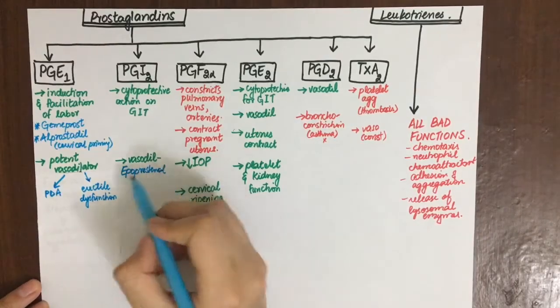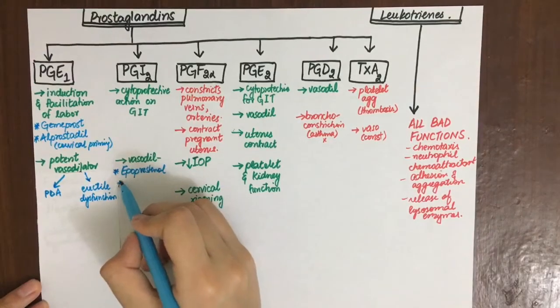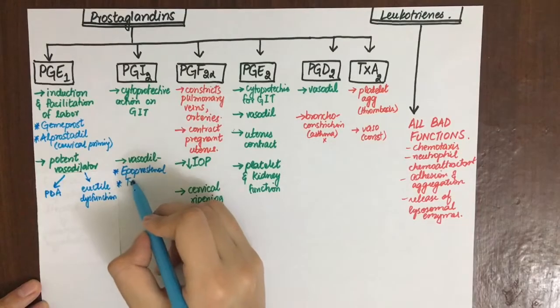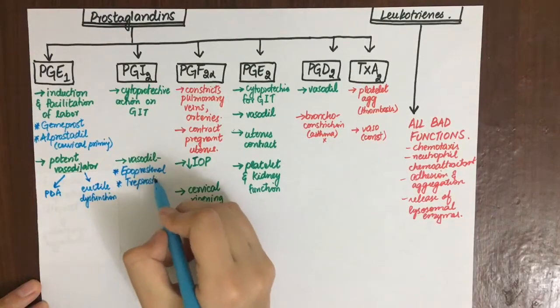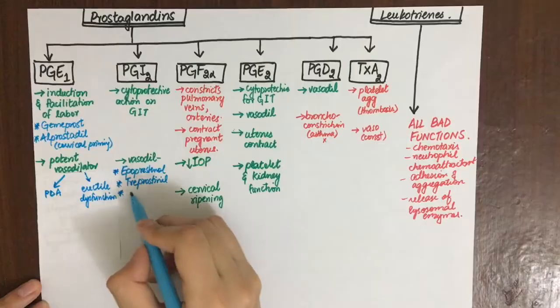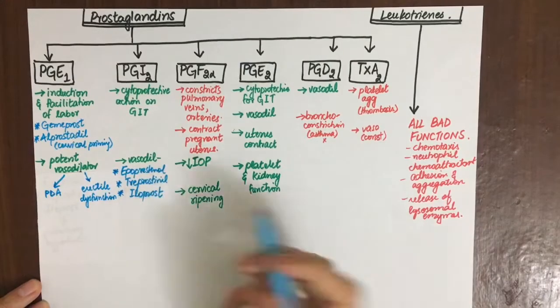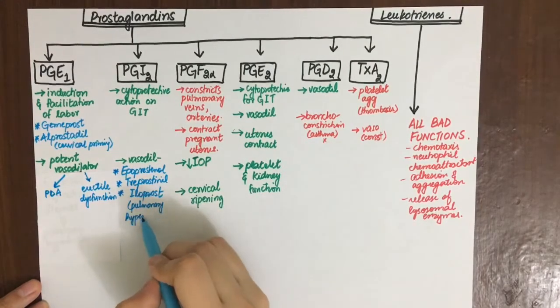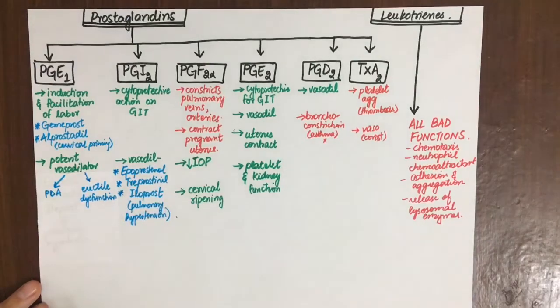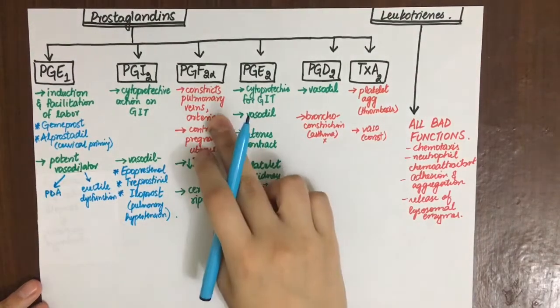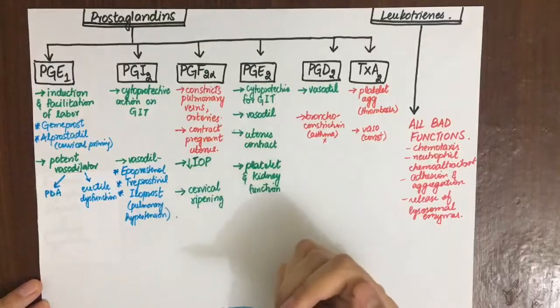PGI2: epoprostenol, treprostinil, and iloprost can be used in pulmonary hypertension due to its vasodilatory effect. This vasodilatory effect is prominent in peripheral, pulmonary, and coronary circulation.